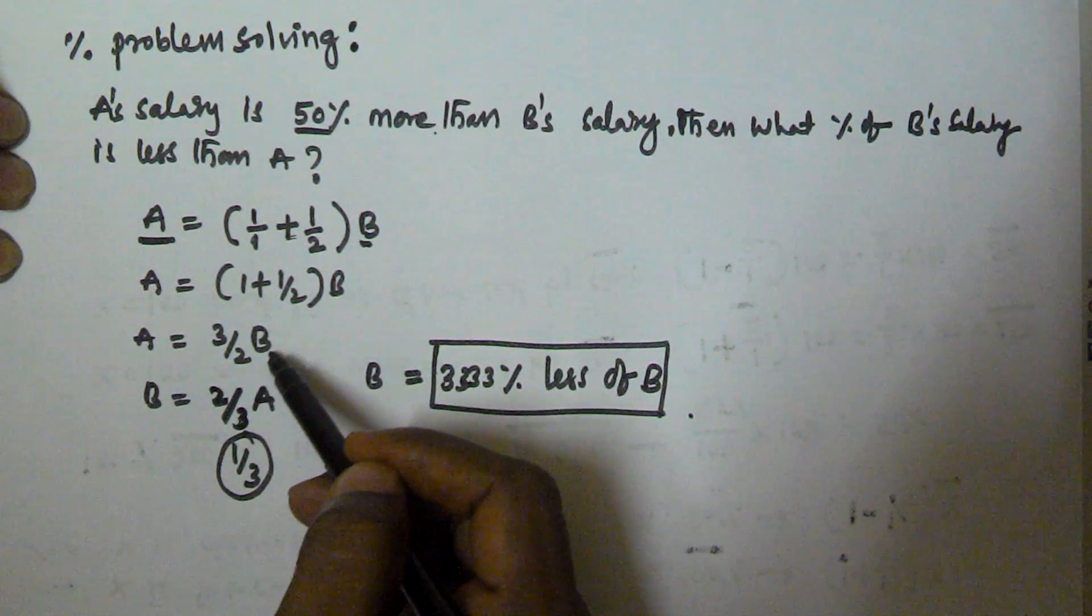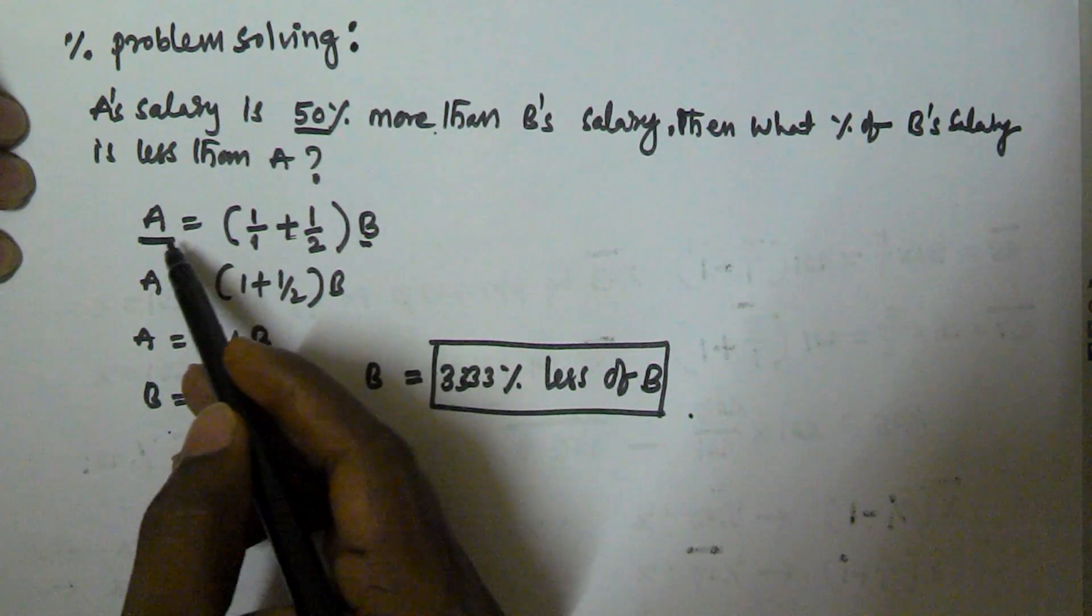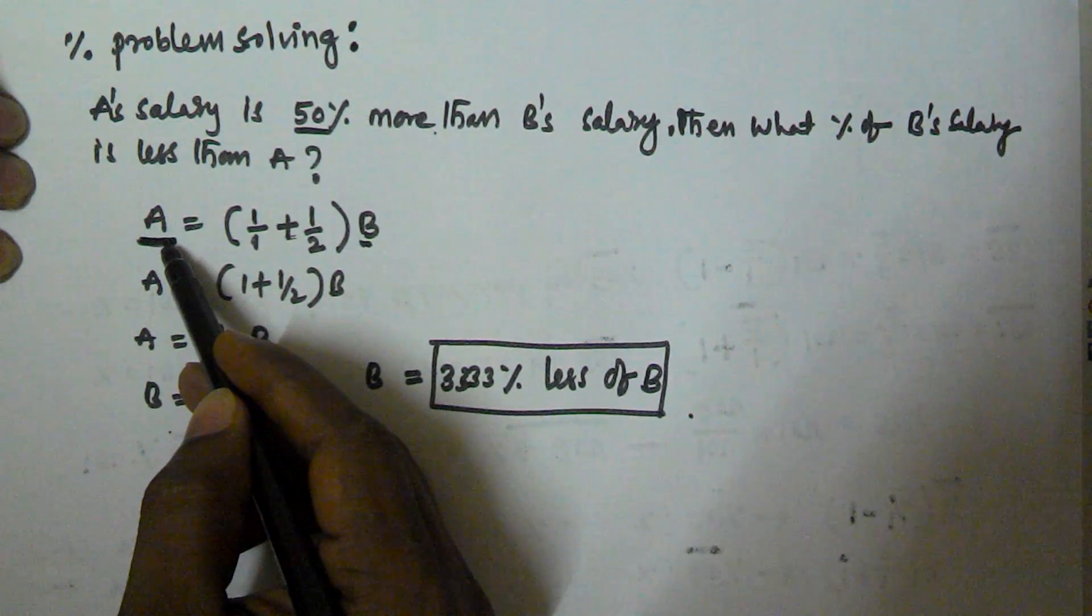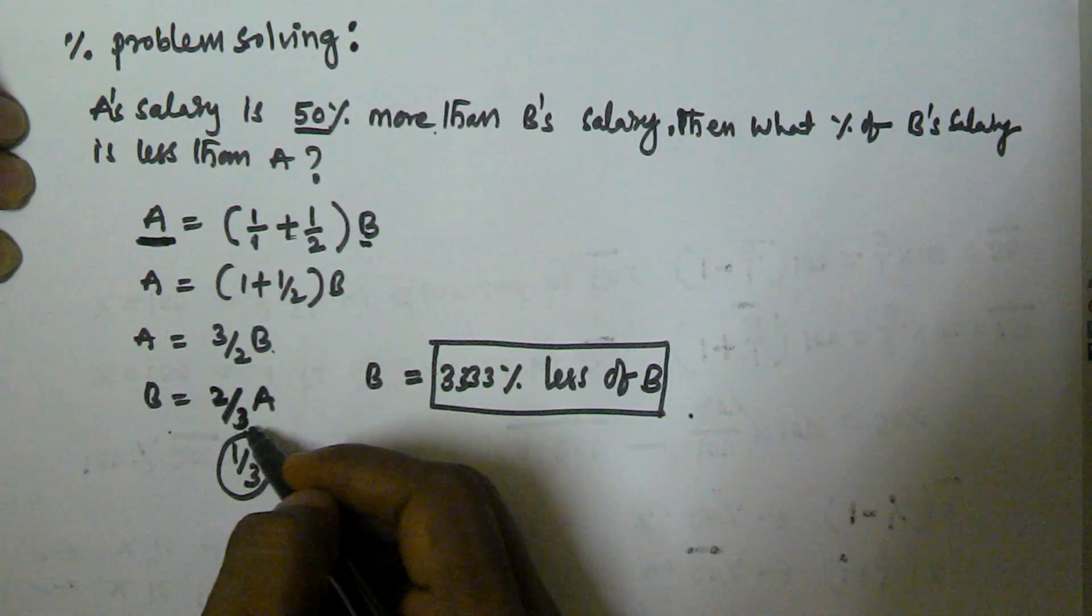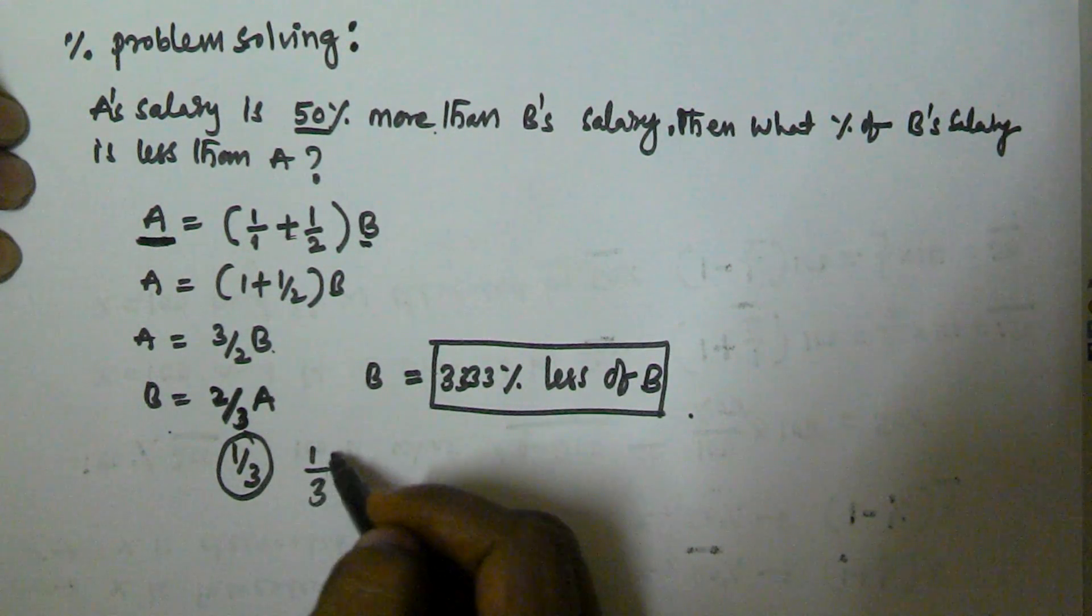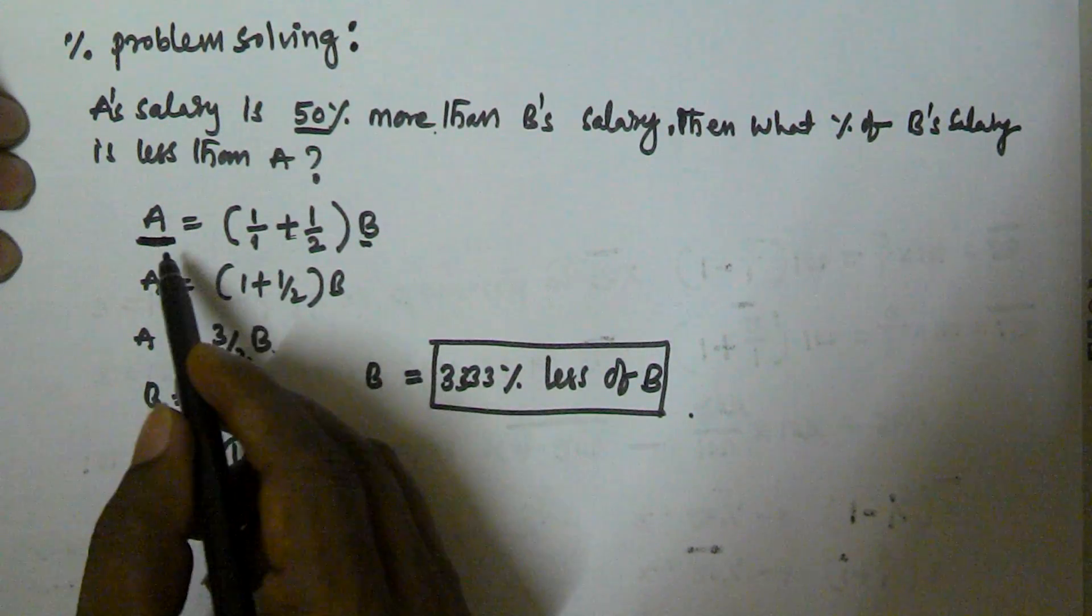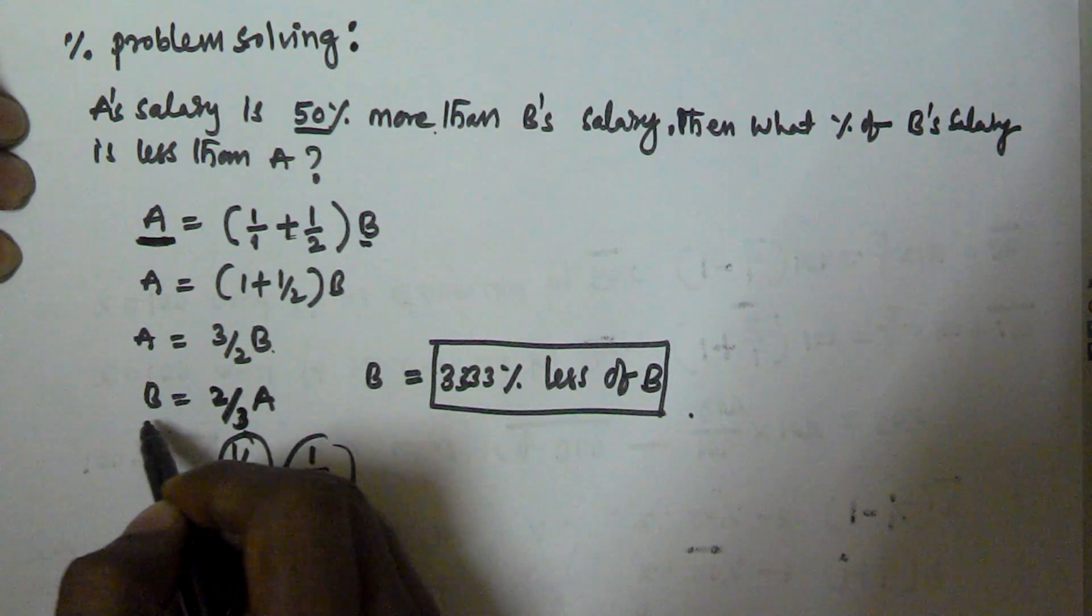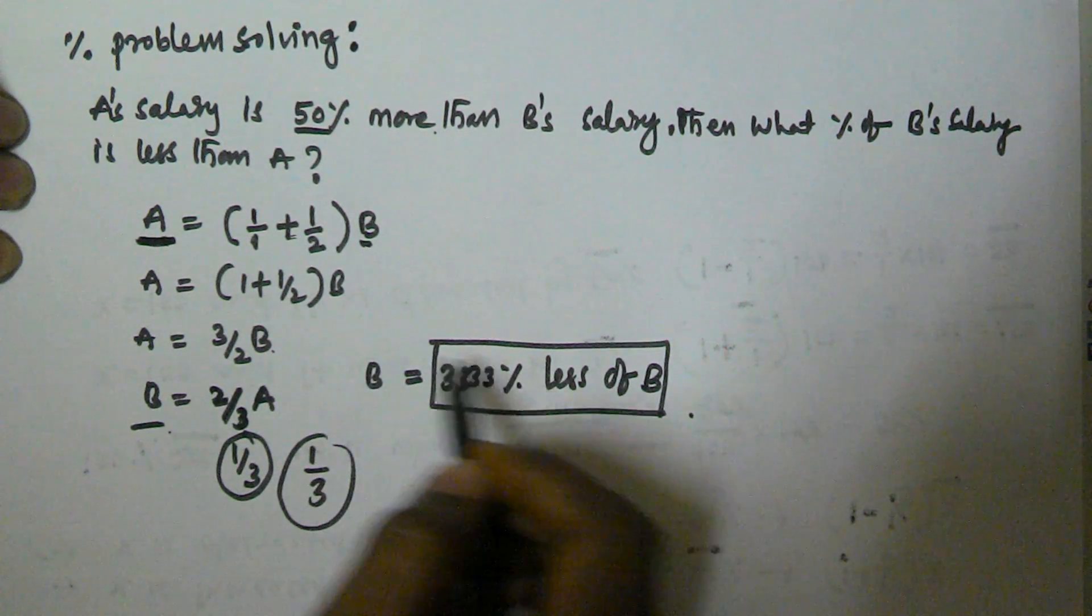So A is equal to 3 by 2 of B. Then B is equal to 2 by 3 of A. So initially the value of A is A, that is 100%. But here it is 2 by 3. So that means it is reduced by 1 by 3. It is reduced by 1 by 3 from the previous value.